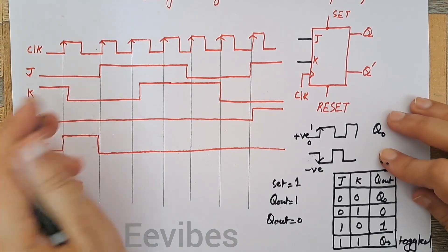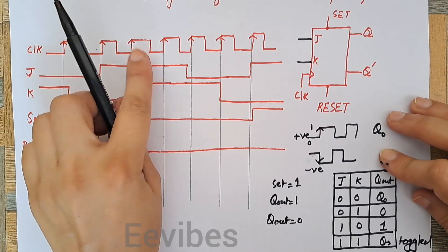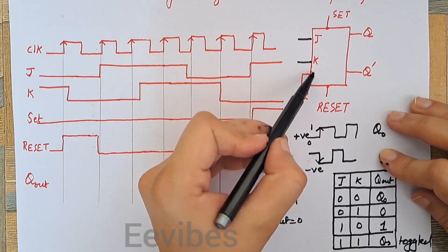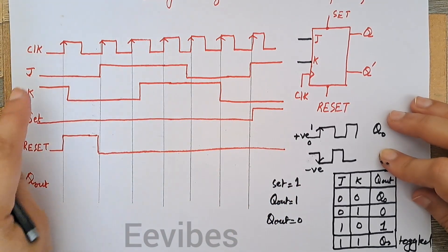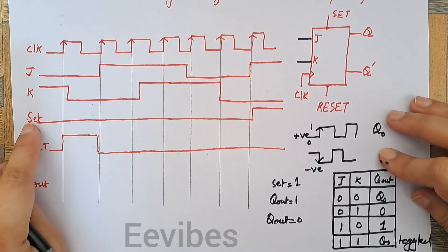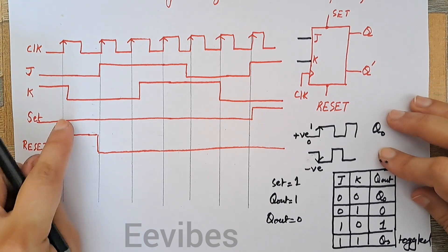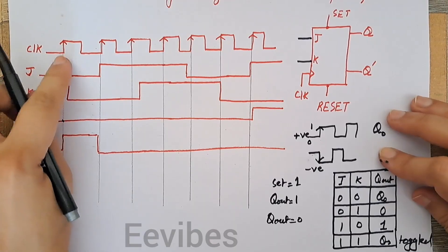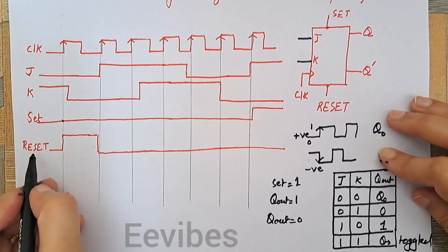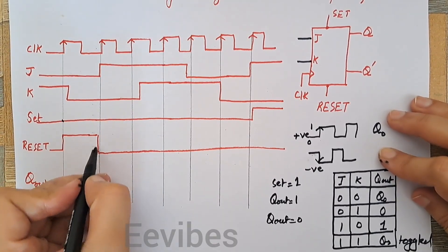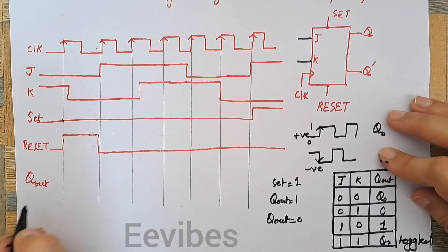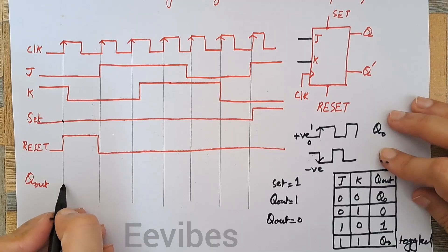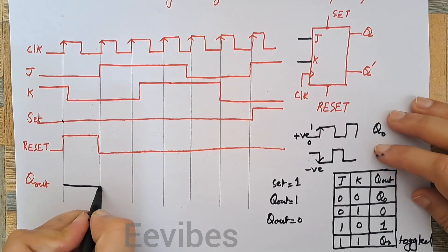You can see this is a positive edge-triggering flip-flop. For a negative edge-triggering flip-flop, there is always a bubble present before this sign. First, we look at the values of the set and reset inputs. Since the set input is initially 0 and the reset is equal to 1, we ignore the values of J and K and reset the output equal to 0.